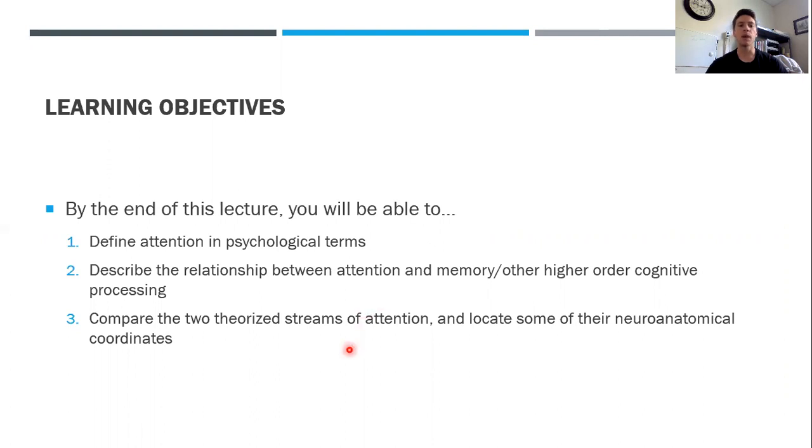Finally, you'll be able to compare two theorized streams of attention. We'll talk about a two-process stream of attention theory, and also be able to locate some of their neuroanatomical coordinates—what parts of the brain are involved in both types of attention.